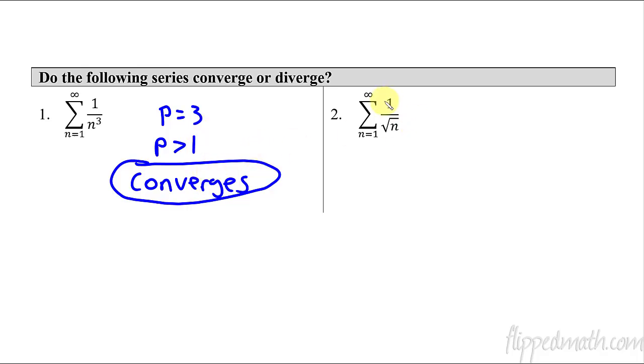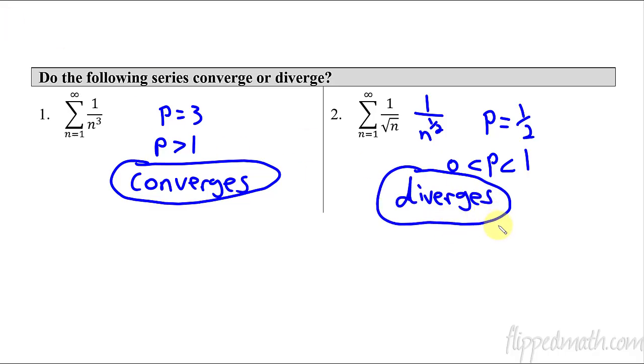So here we have, is this a p-series? This is 1 over, this is the same thing as n raised to the 1 half. So 1 over something raised to a power. Yes, this is a p-series. The value of p is 1 half. Now in this case, p is between 0 and 1. Therefore, this series diverges.